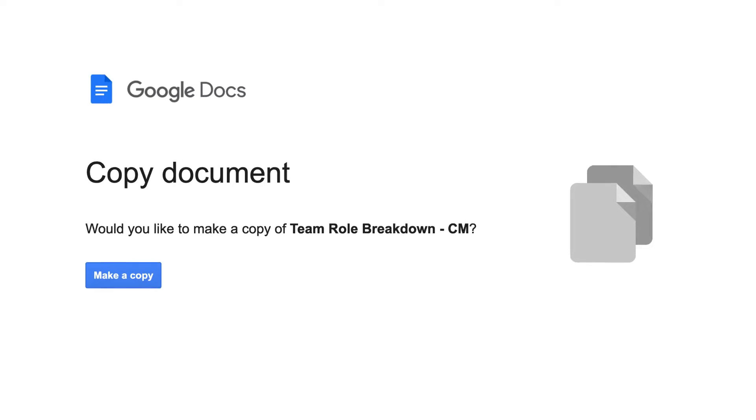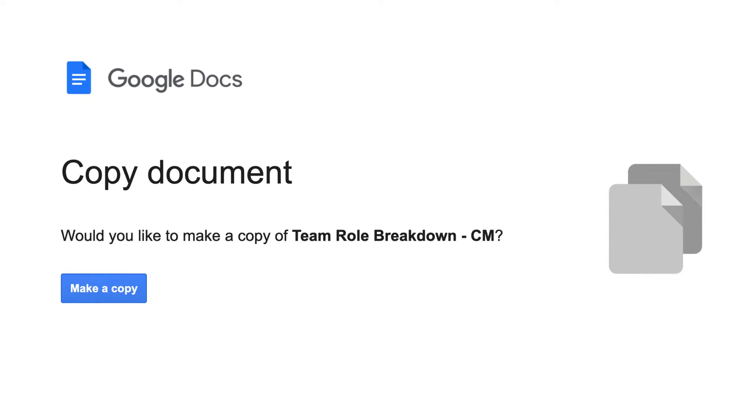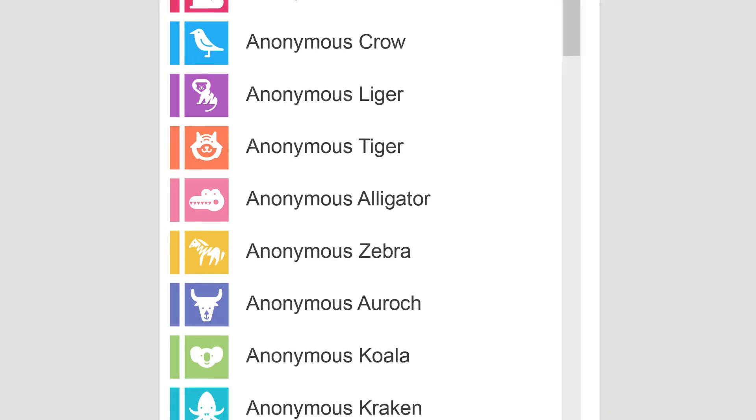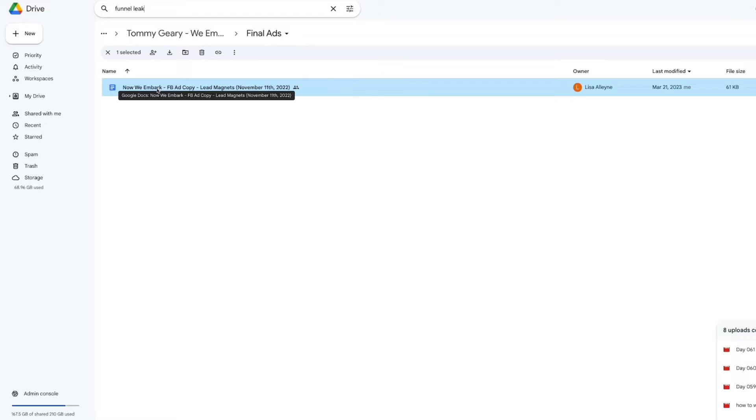If you want to make a forced copy link of a Google Doc or a Google Spreadsheet and you want people to have to copy it to their own Google Drive instead of using your own document, there are two ways to do it. The first way is good for anyone in the online space — an educator, what have you. The second way is the better way if you're an online course creator or membership owner.